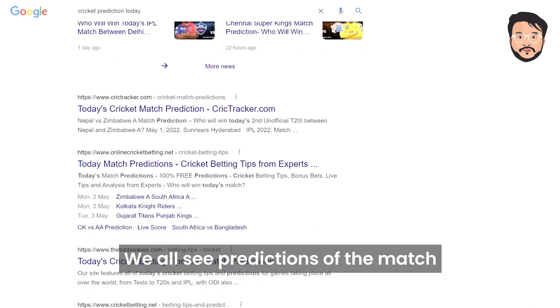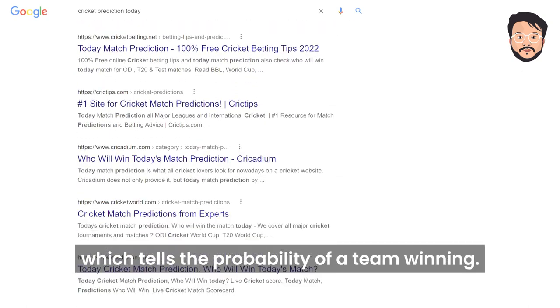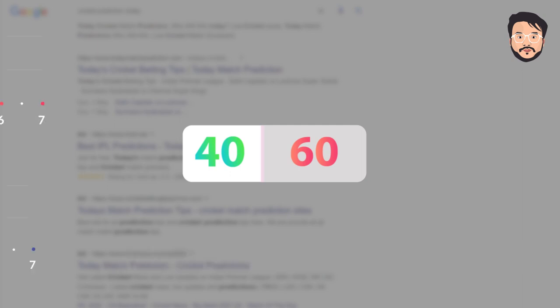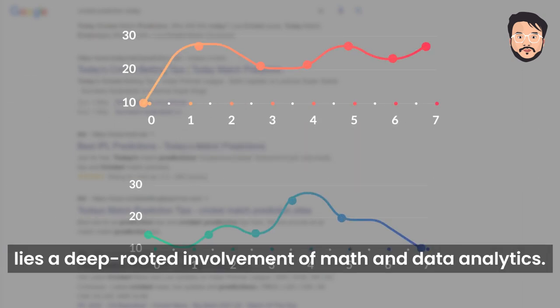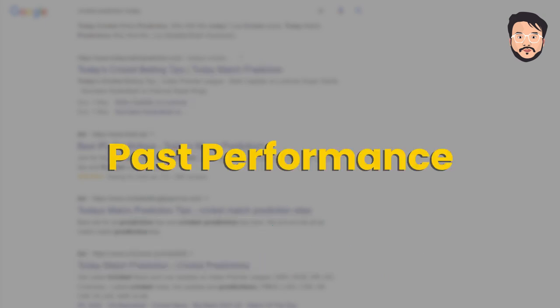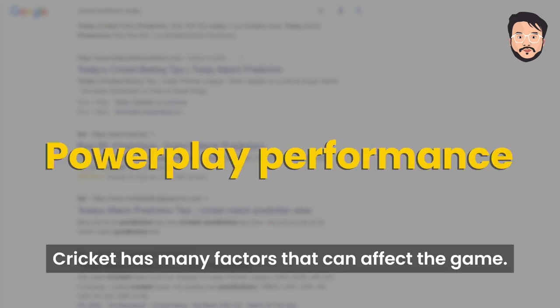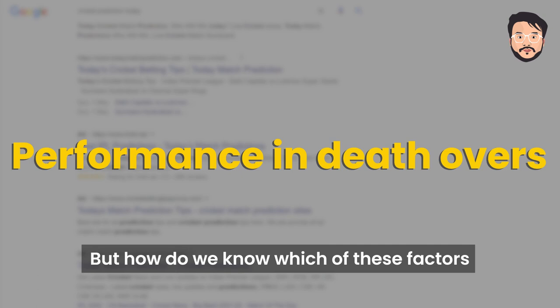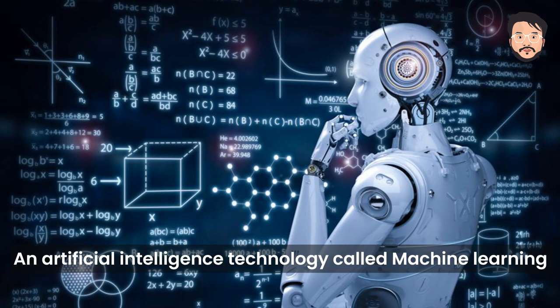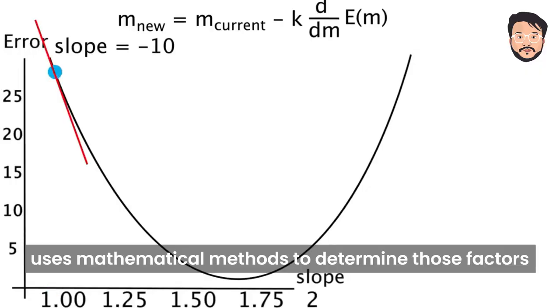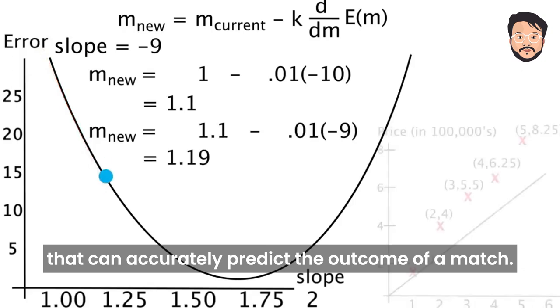We all see predictions of the match which tell the probability of a team winning. These aren't just what people feel — behind a couple of numbers we see on the screen lies a deep-rooted involvement of math and data analytics. Cricket has many factors that affect the game, but how do we know which of these factors help us accurately predict the outcome? That's where the math comes in. An artificial intelligence technology called machine learning uses mathematical methods to determine those factors that can accurately predict the outcome of a match.